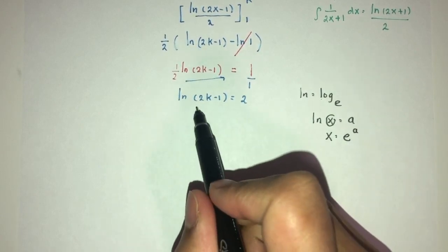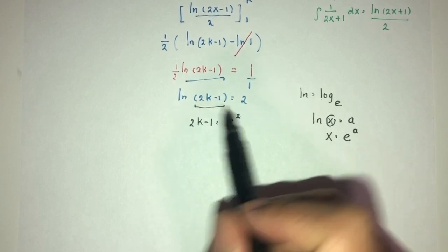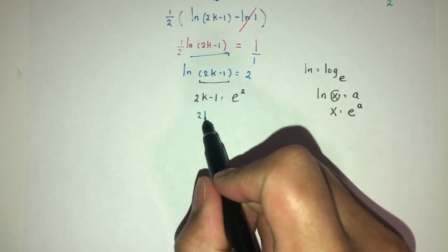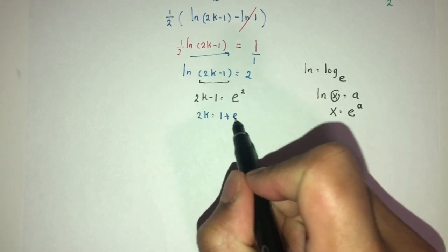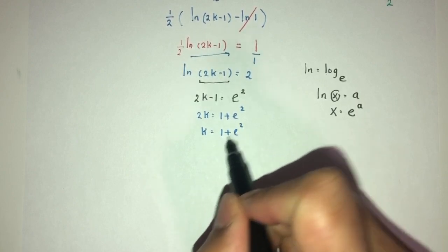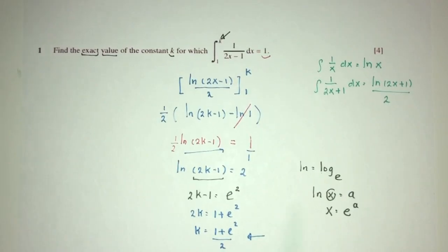Here you will have the value inside. It will be 2k minus 1 is equal to exponential 2. Finally, we have 2k is equal to 1 plus exponential 2. k will be 1 plus exponential power 2 divided by 2. This is the exact value of k for your question number 1.